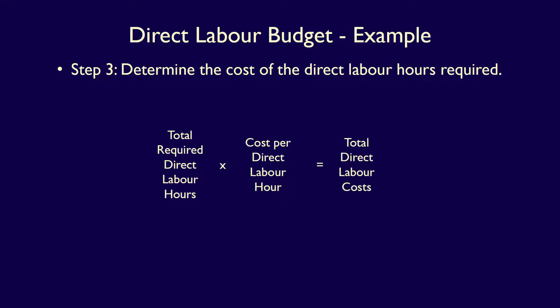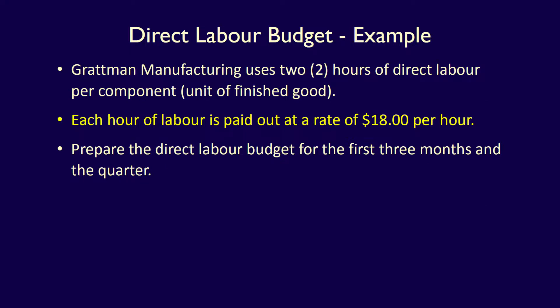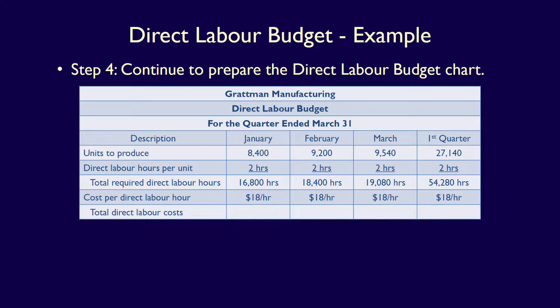We can now use this formula in step 4, which is to continue preparing the direct labour budget chart. We'll fill in the last two rows with cost per direct labour hour and total direct labour costs. Returning to the question, the cost per direct labour hour is $18 per hour. We fill that in for every month and the first quarter: $18 per hour.